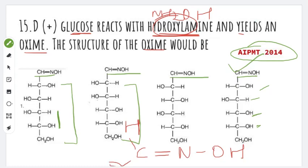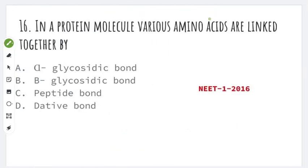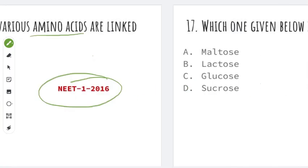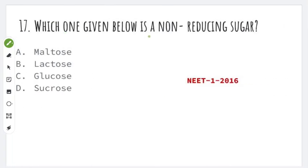Next question: in a protein molecule, various amino acids are linked together by what? Very simple — the answer is a peptide bond, option C. This is the NEET Phase 1 2016 question. Next question: which one given below is a non-reducing sugar? The example for a non-reducing sugar is sucrose. So sucrose is the right answer. This is NEET Phase 1 2016.